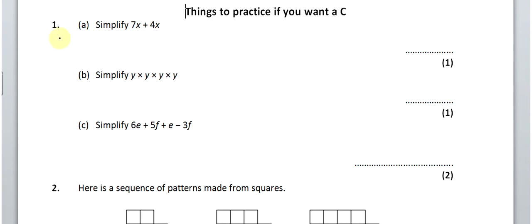Solutions to number 5. Starting off with a bit of algebra, we're going to simplify 7x plus 4x, and 7x and 4x make 11x, because you've got 7 of them and 4 of them.